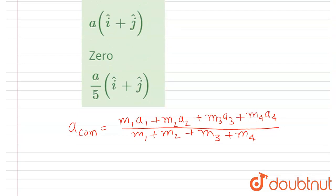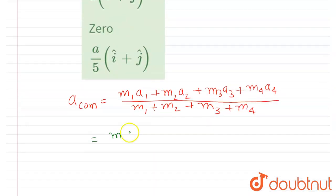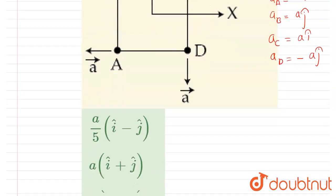So I will put the values here. The mass of first particle A is m and acceleration is -a î. Now mass of particle B is 2m and acceleration is a ĵ.